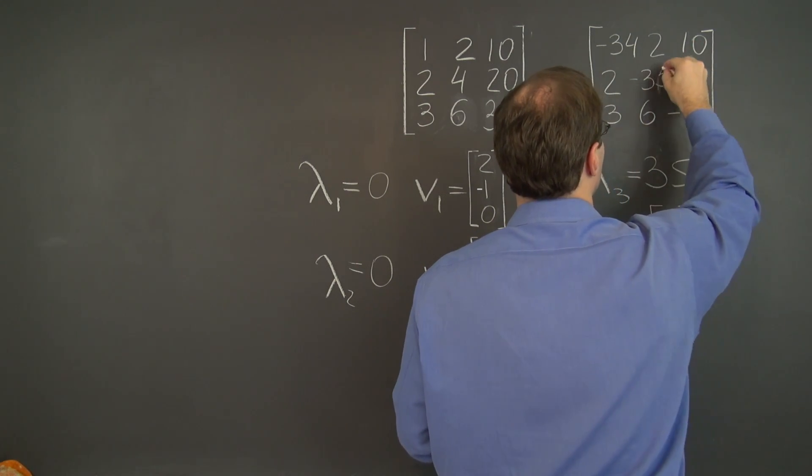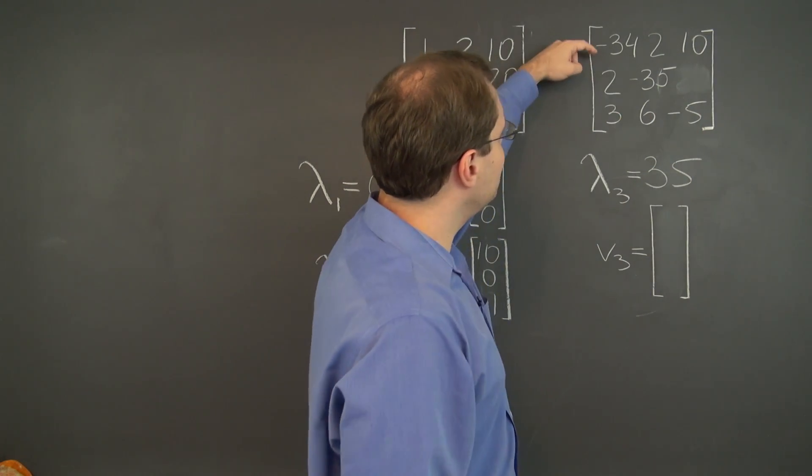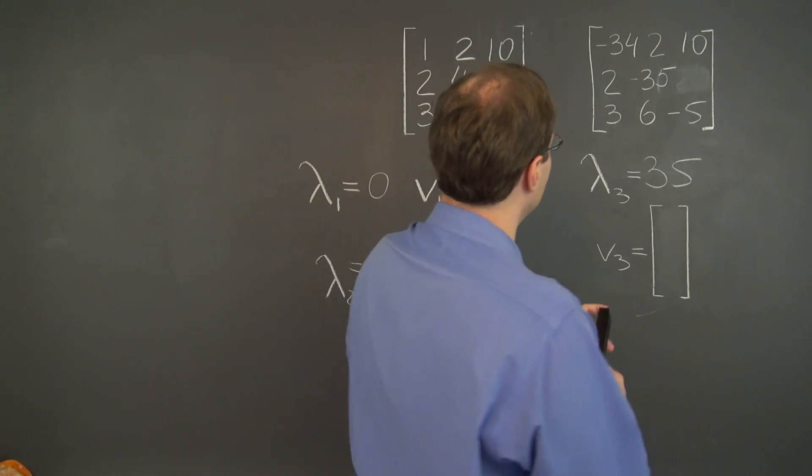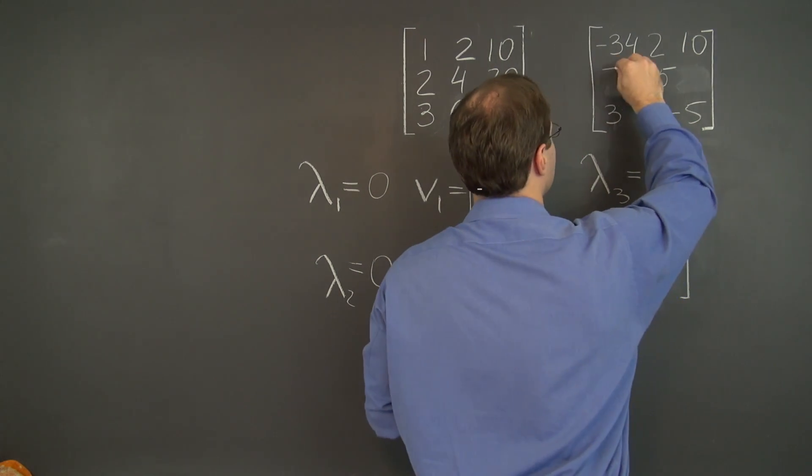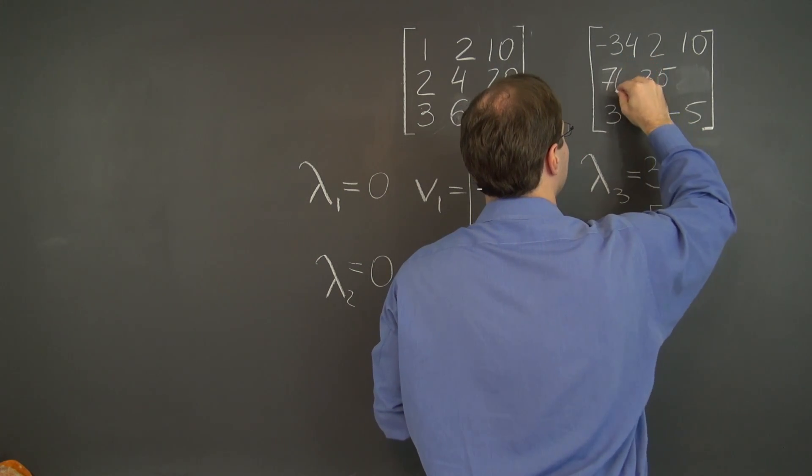So 31 becomes negative 35. And subtracting minus 68 from 2 results in 70.